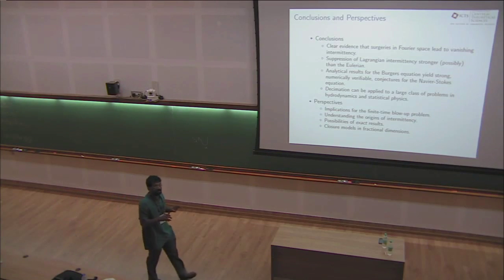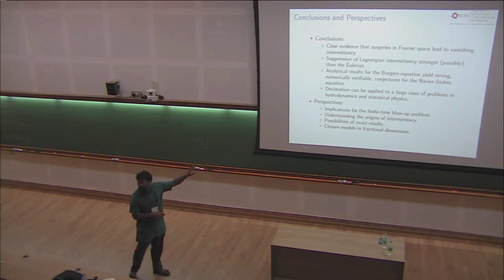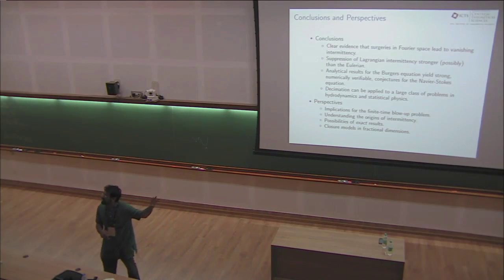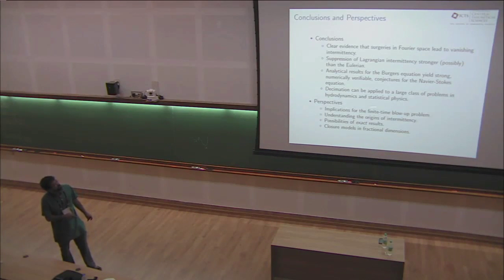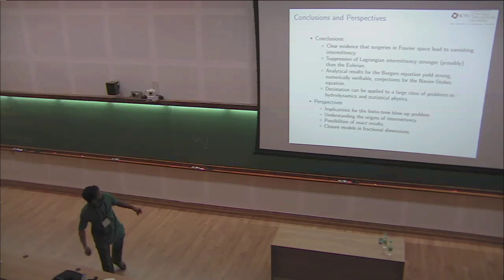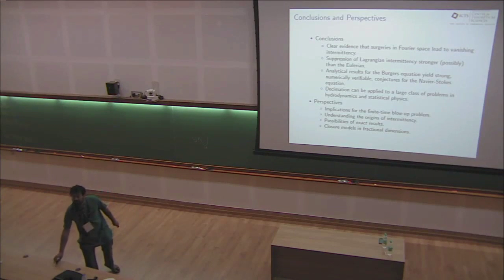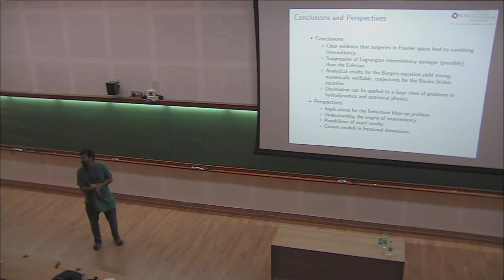To conclude: there is clear evidence and good theory for understanding why decimation kills intermittency in the Burgers equation. The conjectures seem to go through to Navier-Stokes; we still have a lot of calculations to finish to check the theory and the numerics. Since it's a status meeting, I'd like to highlight that this procedure can be applied to other problems, and the perspective is that hopefully this will lead to rather interesting conclusions in the coming years. Thank you.